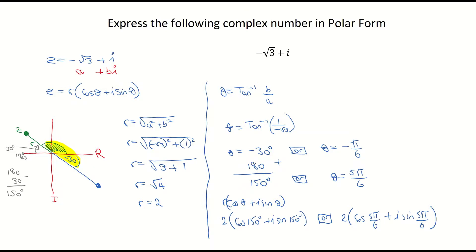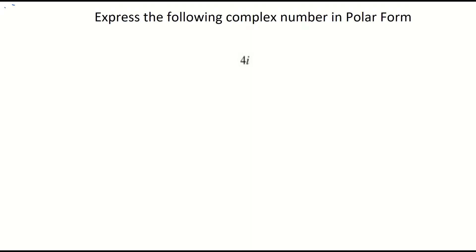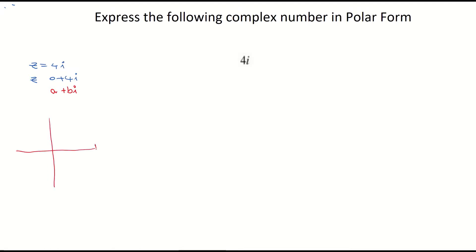Example 3: express the complex number 4i in polar form. We write Z equals 4i, which is the same as 0 plus 4i. So the real part A is 0, and the imaginary part B is 4. On the Argand diagram, we're not moving along the real axis at all, but going up to 4i on the imaginary axis. The distance from the origin up to that complex number is clearly 4 units.